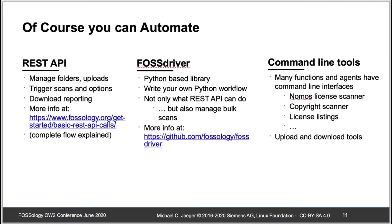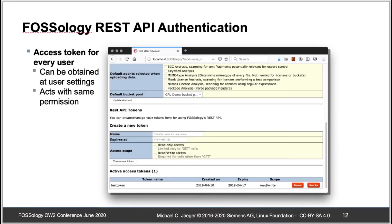You can still automate with FOSSology if you wish to pre-check found licensing without an expert looking at individual files. You have the REST API, but also another project called FOSDRIVER, which is a Python library to remotely control your FOSSology. The REST API is very easy to use — in the UI where you administer user settings, every user can generate a token, which is used to authenticate against the REST API.